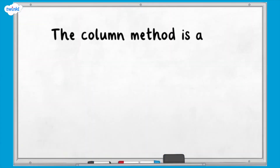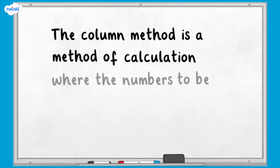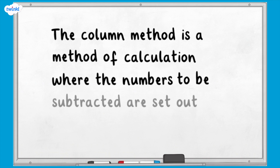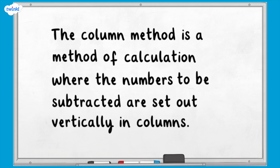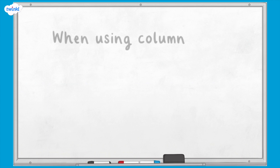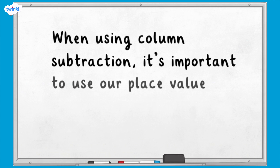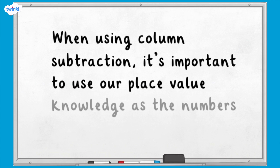The column method is a method of calculation where the numbers to be subtracted are set out vertically in columns. When using column subtraction, it's important to use our place value knowledge as the numbers must be correctly lined up.